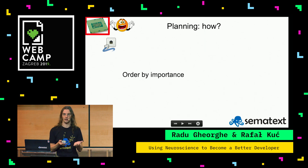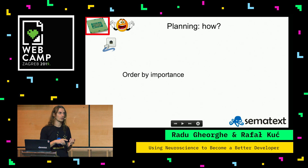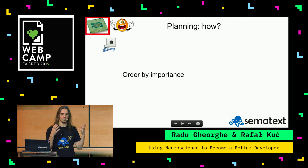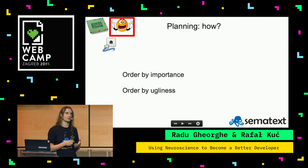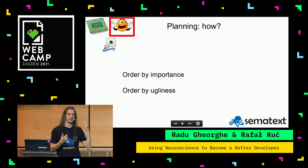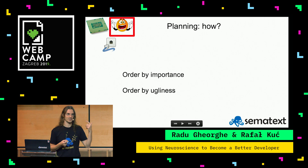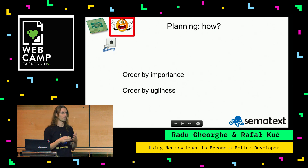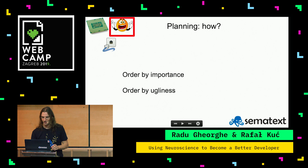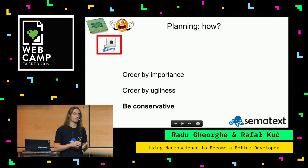Let's move on to how I think planning would work. First of all, I would order by importance — you want to be on fresh brains when you work on the most important task. Then I would order by ugliness. If a task is something we hate, it just sticks in the back of our mind, generating stress, eating cycles. We don't want that — we want to finish them. And third and probably the most important thing is to be conservative with the estimations.